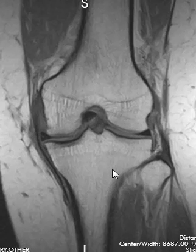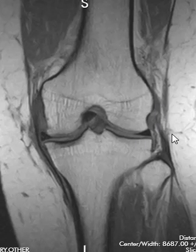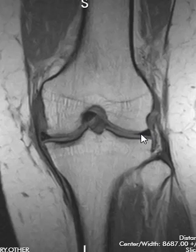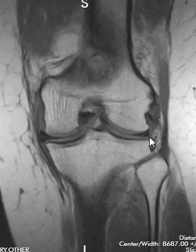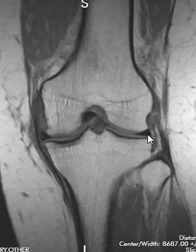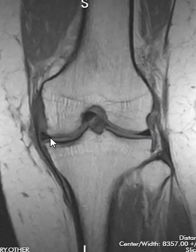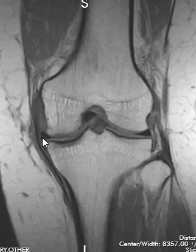Now the lateral meniscus is over here — this is the lateral side. The medial meniscus is over here. The meniscus is a little triangular wedge, and it's just wedged right between the femur, which is round, and the tibia, which is flat. This patient's lateral meniscus looks normal. The medial meniscus, though, was the problem.